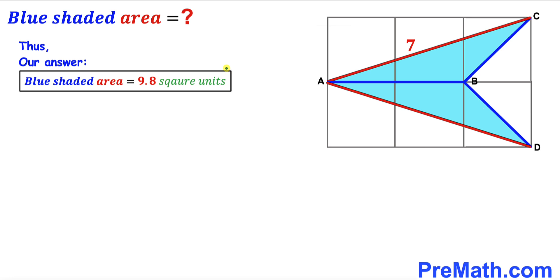After all the calculations, the area of this blue shaded region turns out to be 9.8 square units. That's our final answer. Thanks for watching and please don't forget to subscribe to my channel for more exciting videos.